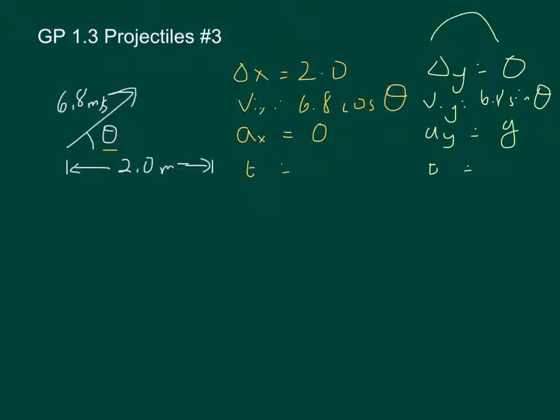This is another equation where it's a really good idea to solve it using variables. In the horizontal direction, we have delta x equals v cosine theta t plus zero. I'm going to solve that for t because I'm going to want to use that to sub in. So delta x over v cosine theta equals t.